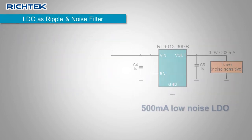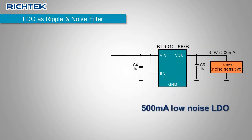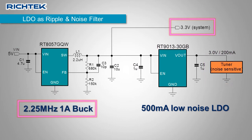Here is a practical example, where a low noise LDO RT9013 needs to provide a clean, ripple-free 3V supply to a sensitive tuner. The input rail of the LDO is a 3.3V system supply, which is generated from a buck converter running at 2.25 MHz.